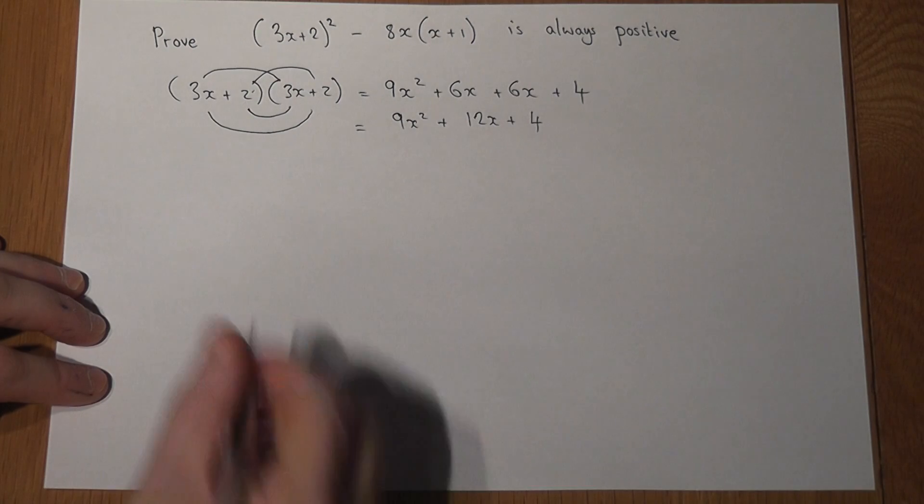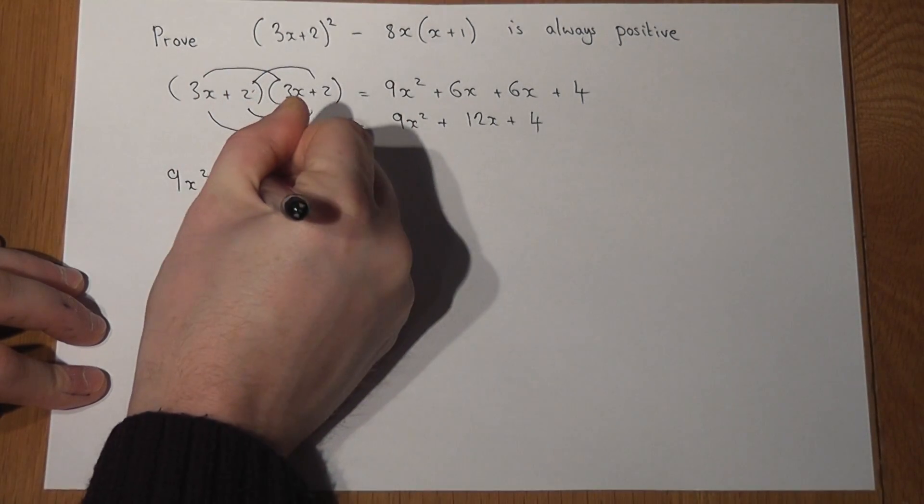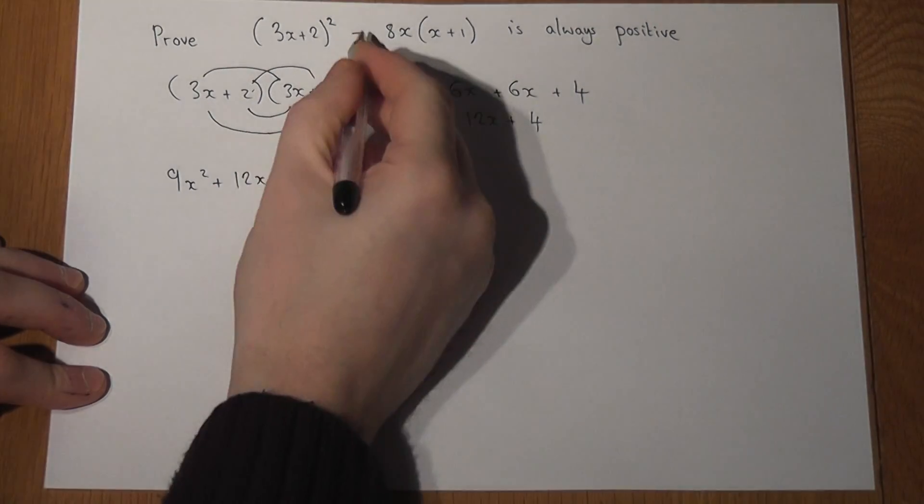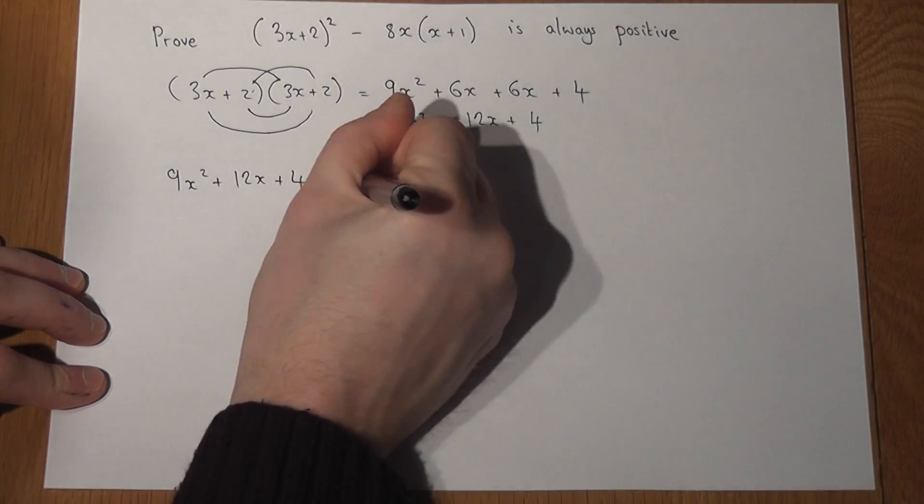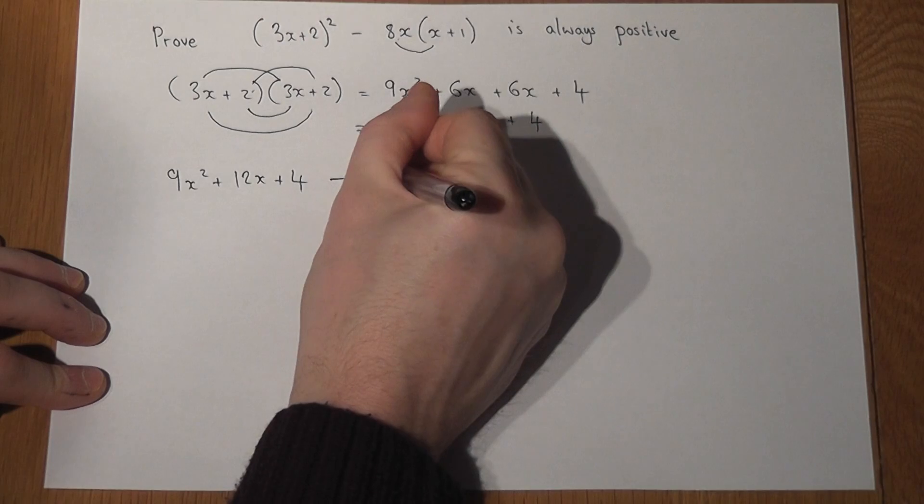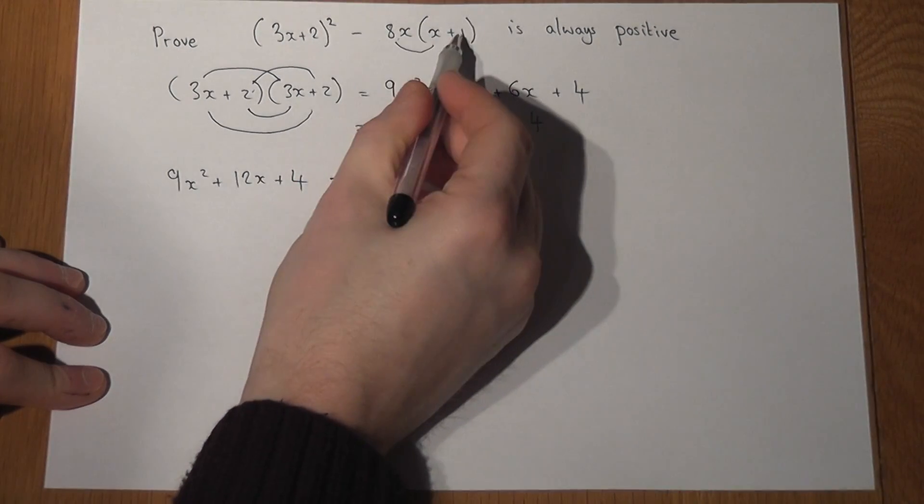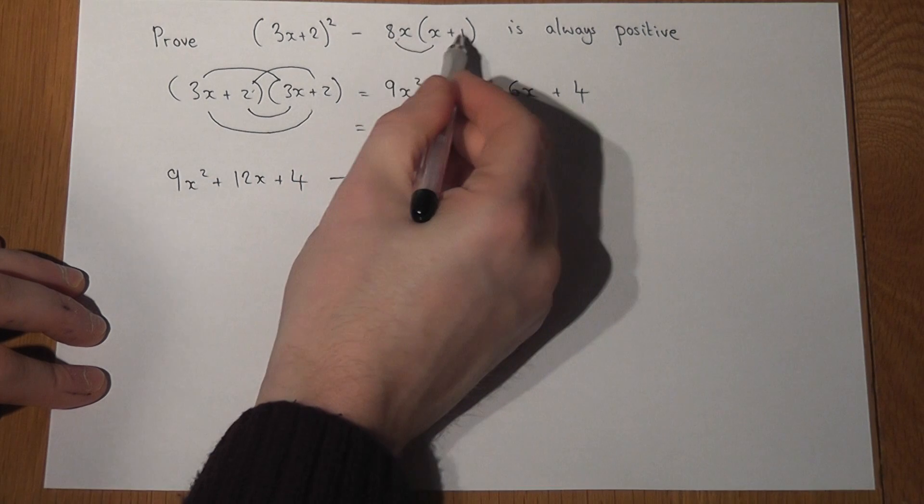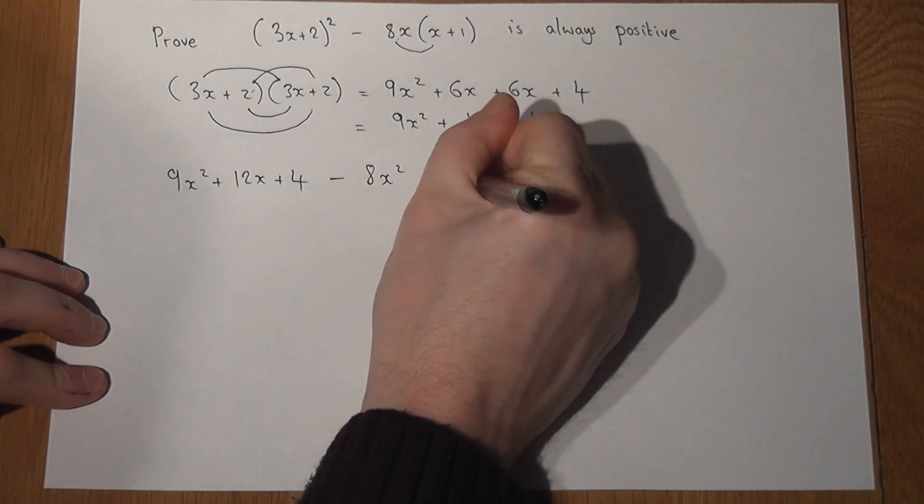So the first part is 9x squared plus 12x plus 4. And I'm taking away 8x lots of x plus 1. So I'm taking away an 8x squared. But I'm also taking away 8x times 1. So 8x times 1 is 8x, so take away 8x.